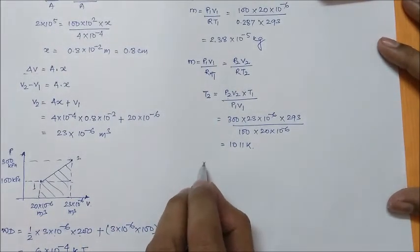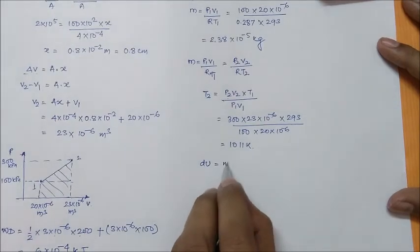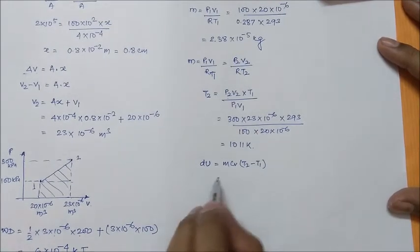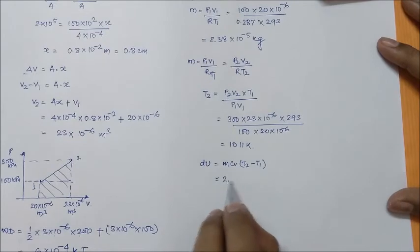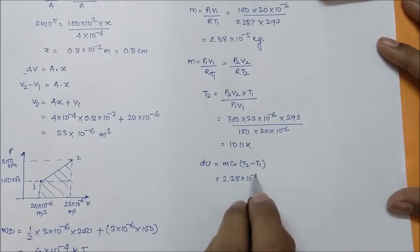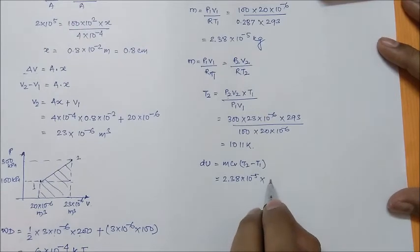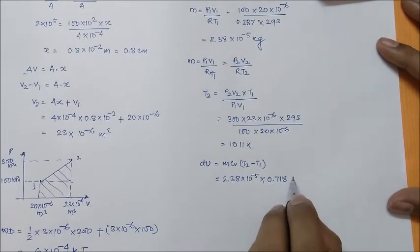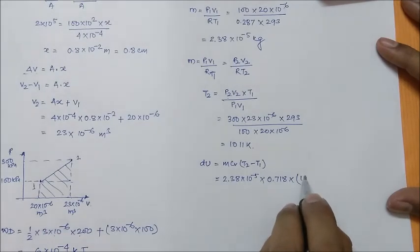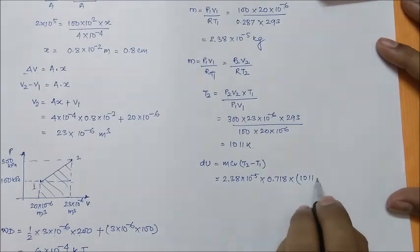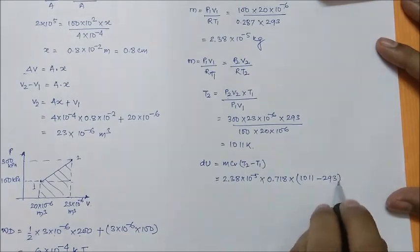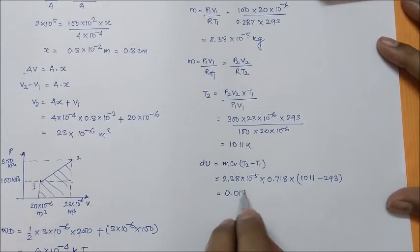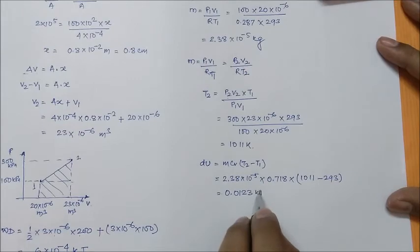The change in internal energy ΔU = m × Cv × (T2 − T1). Mass is 2.38×10⁻⁵ kg. Cv for air is 0.718 kilojoule per kg·Kelvin. T2 − T1 = 1011 − 293 = 718 K. So ΔU comes out as approximately 0.0123 kilojoule.